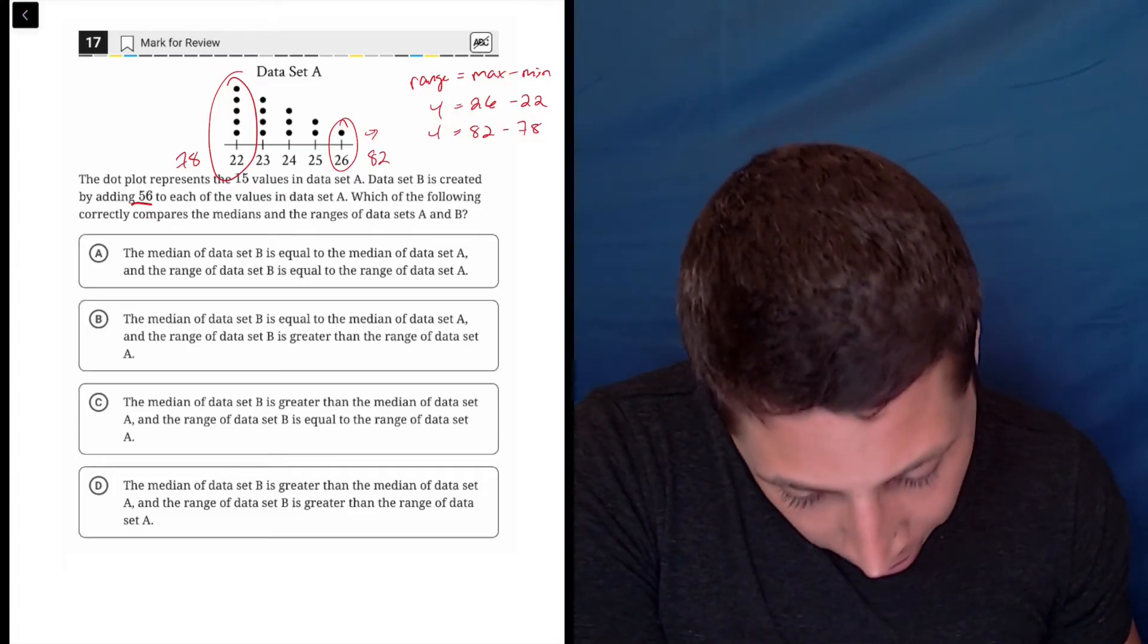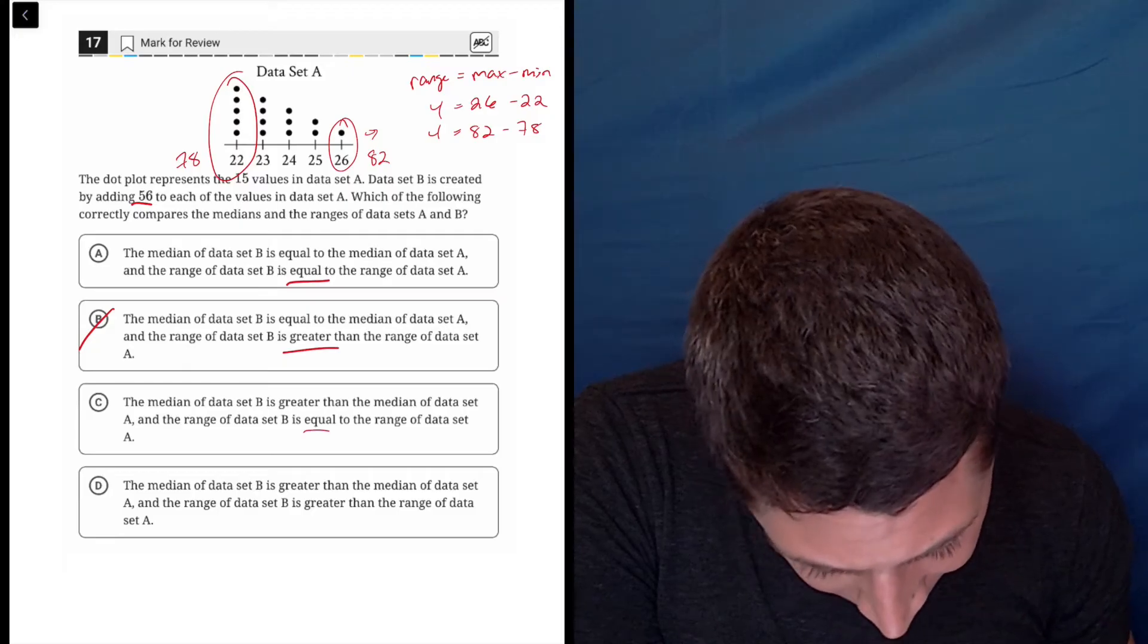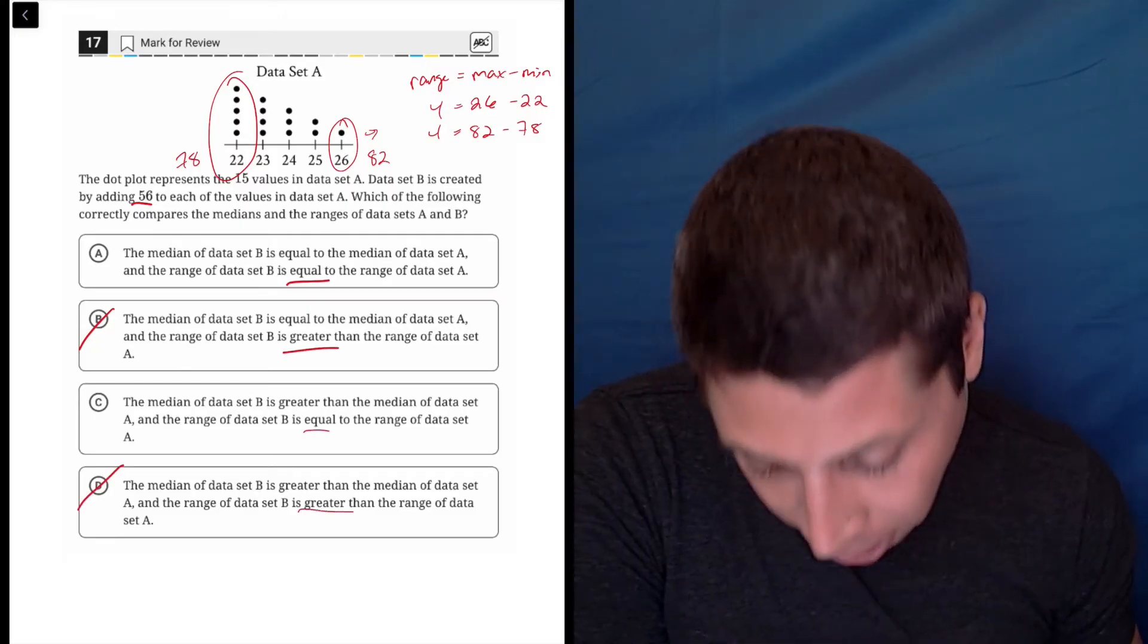So that gets rid of what here? We have equals, that's good. B is gone, that's greater than. This is equal, that's good. This is greater than, that's gone.